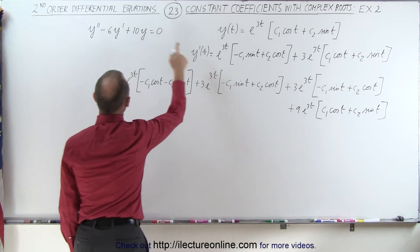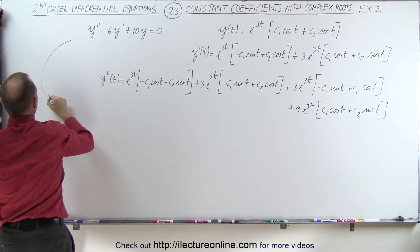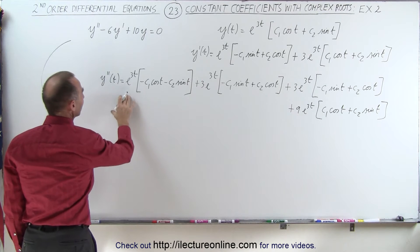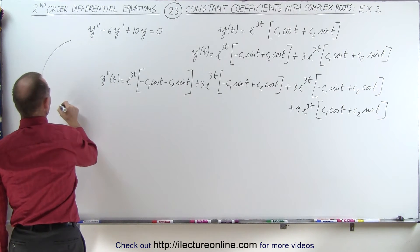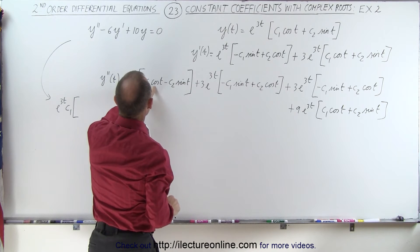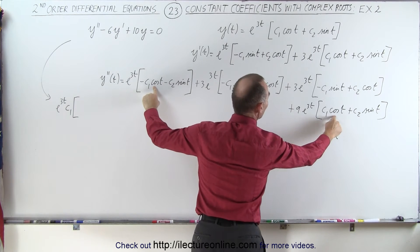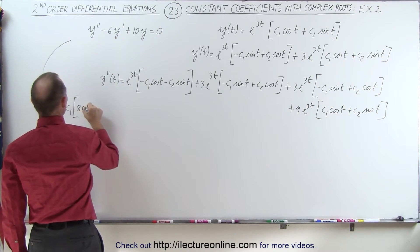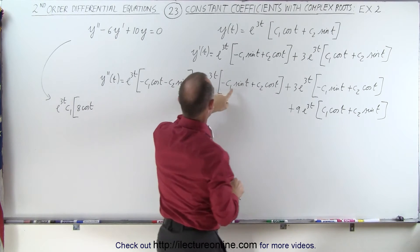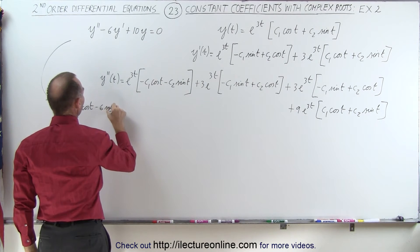Now we're ready to plug into the original equation. We factor out e to the 3t and collect c1 and c2 terms from y double prime. For c1: we have minus cosine plus 9 cosine, that's plus 8 cosine of t; and for the sine terms, minus 3 minus 3 gives minus 6 sine of t. For c2: we have 3 plus 3 giving plus 6 cosine of t, and minus 1 plus 9 giving plus 8 sine of t.